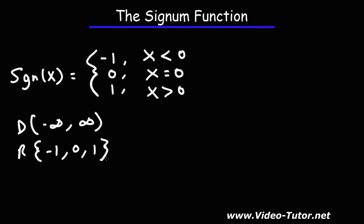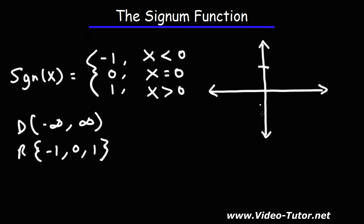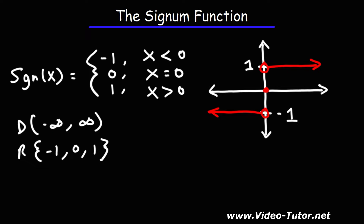Let's draw a rough sketch of the signum function. The most important values are one and negative one on the y-axis. When x is zero, y is going to be zero, so we have a point at the origin. When x is greater than zero, y is going to be one, so we have an open circle going towards the right. When x is less than zero, y is going to be negative one — that's on the left side of the graph.